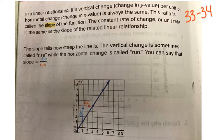The vertical is up and down, so the vertical change per unit of horizontal change, which is side to side, is always the same. This ratio is called the slope of the function. The constant rate of change or unit rate is the same as the slope of the related linear relationship.